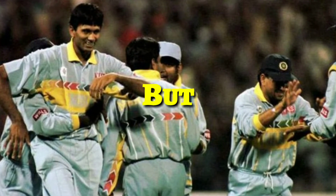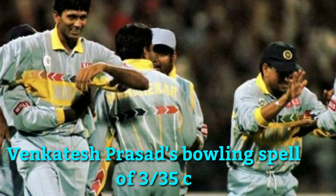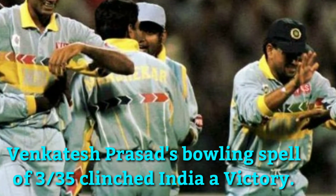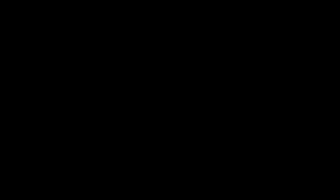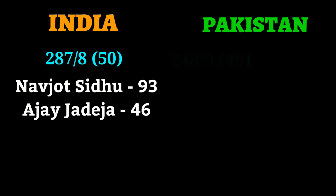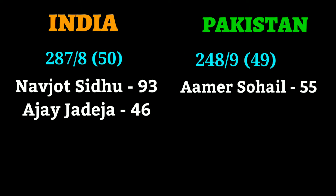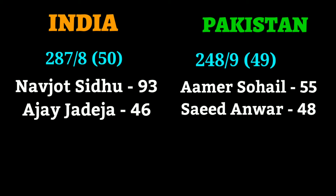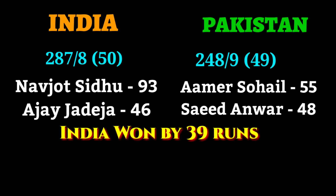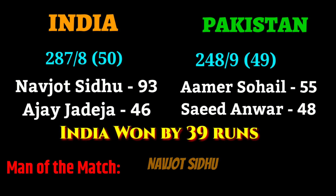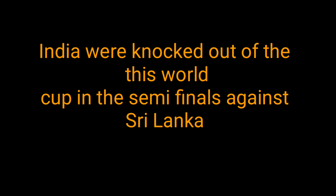But Venkatesh Prasad's bowling spell of 3 for 35 runs meant India a victory. India scored 287 for 8 in 50 overs while Pakistan scored 248 runs in 49 overs. India won the match by 39 runs, with man of the match being Navjot Singh Sidhu. India went on to reach the semi-finals in this World Cup.